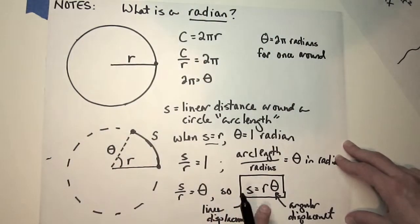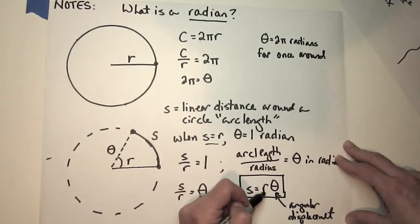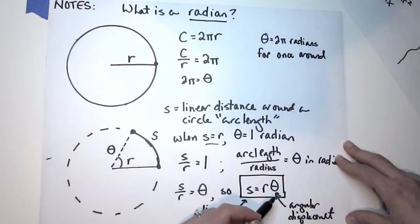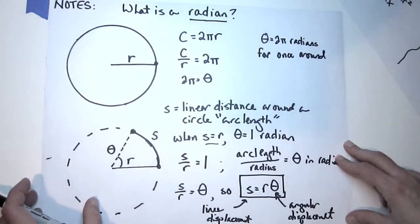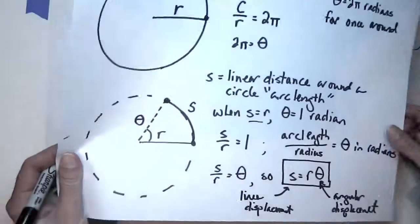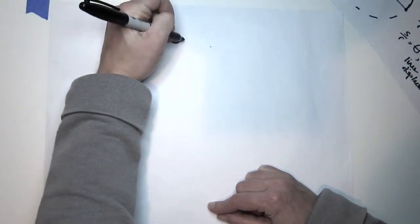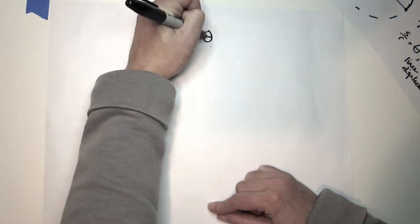The last thing I want to go over is that this R translator can be used for any angular measure, whether it's theta, omega, or alpha. Just to set up our translators, we know linear displacement equals R times angular displacement.